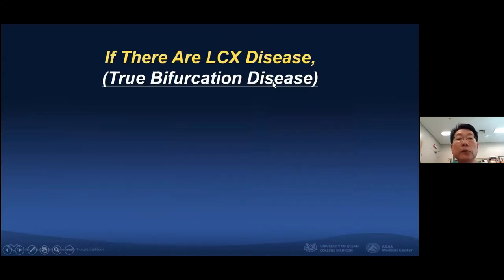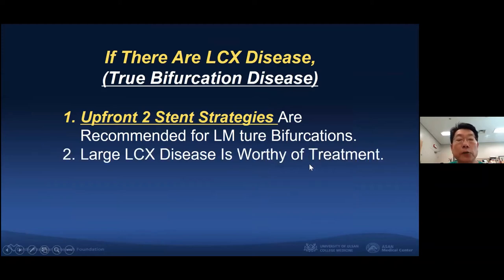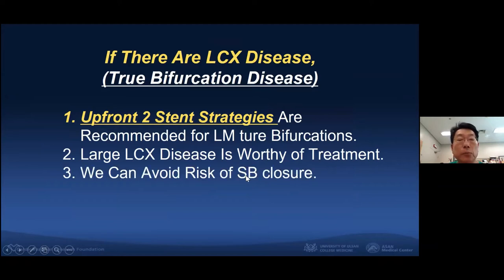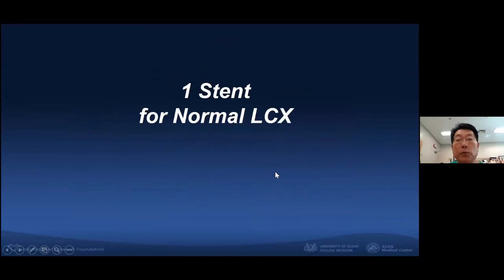If there is true circumflex disease — true bifurcation disease — upfront two-stent strategies are recommended for main true bifurcation disease. The reason why treating a large circumflex disease is important is that we can avoid the risk of side branch closure. Clinical outcomes of two-stent are as good as one-stent crossover.